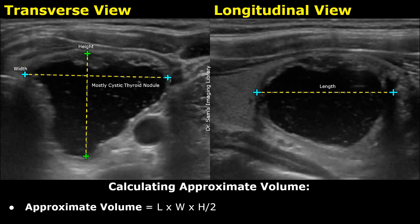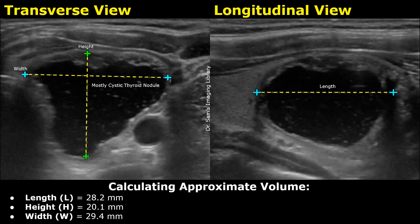Keep in mind that this formula will give an approximate volume, so it is not 100% accurate. Let's use this case to calculate the volume of this cystic nodule. Its length is 28.2 mm, the height is 20.1 mm, and the width is 29.4 mm. Here we have used the exact measurements in mm instead of rounding off to the nearest mm so we can get a volume that is as accurate as possible.